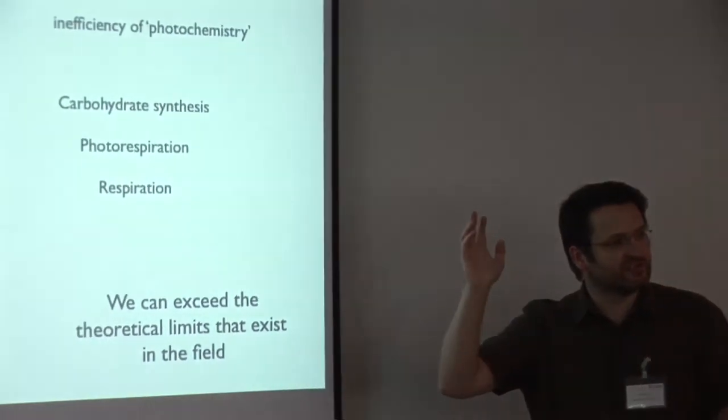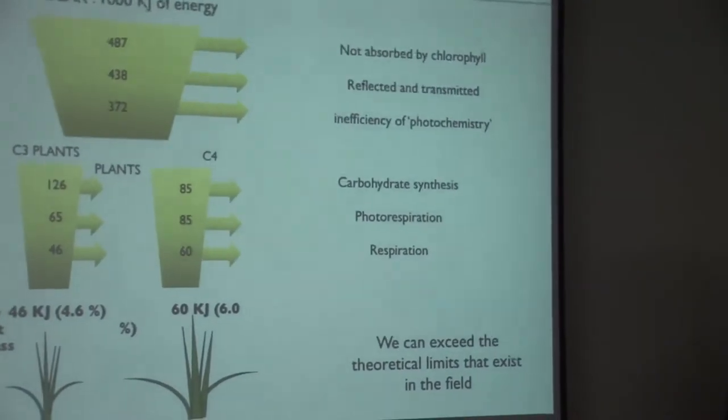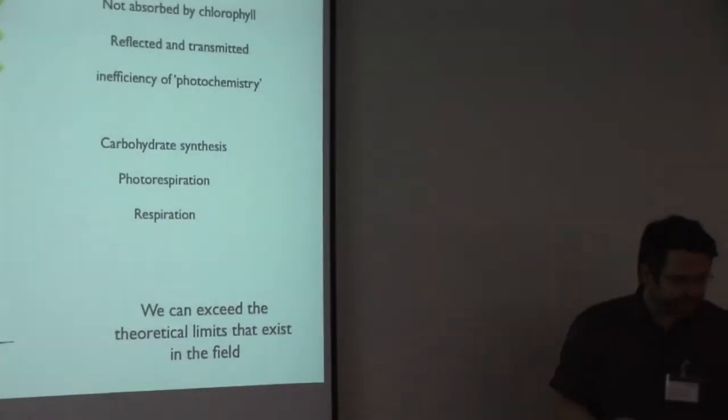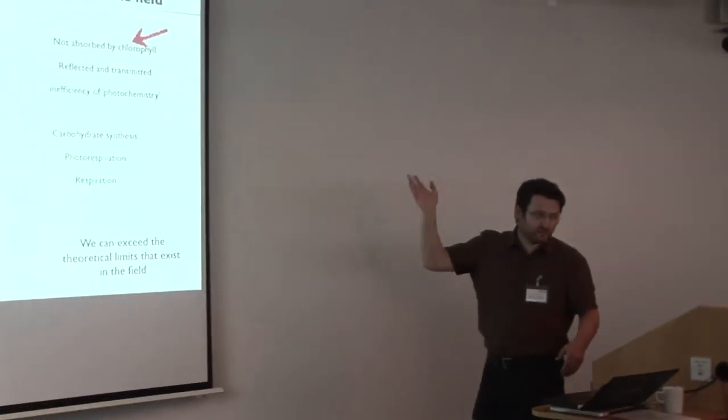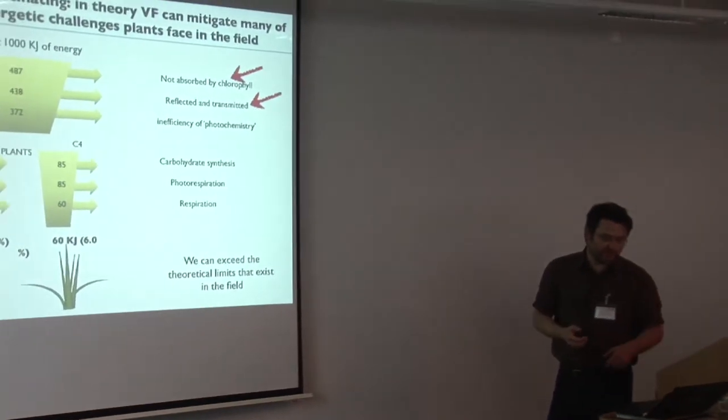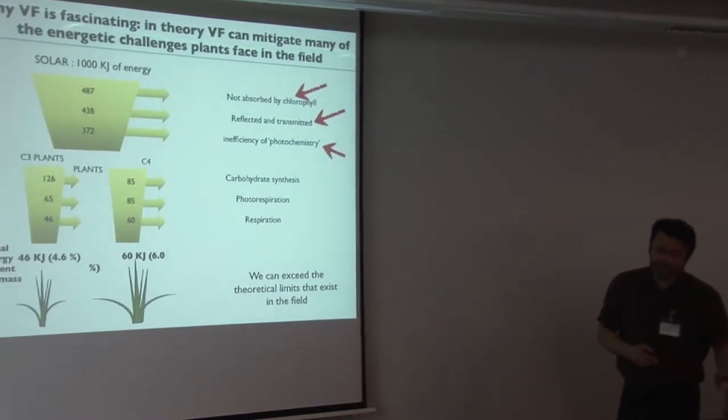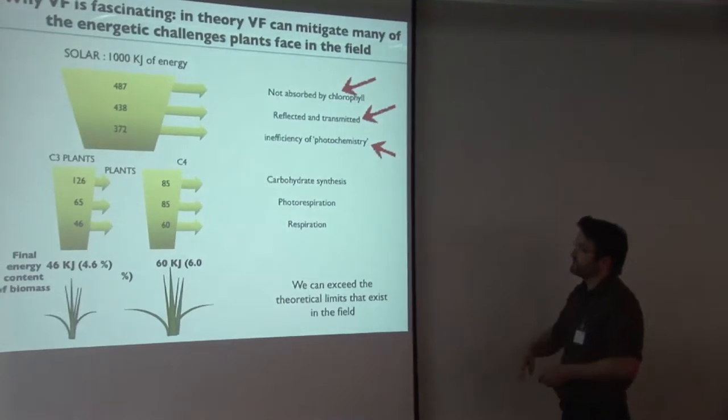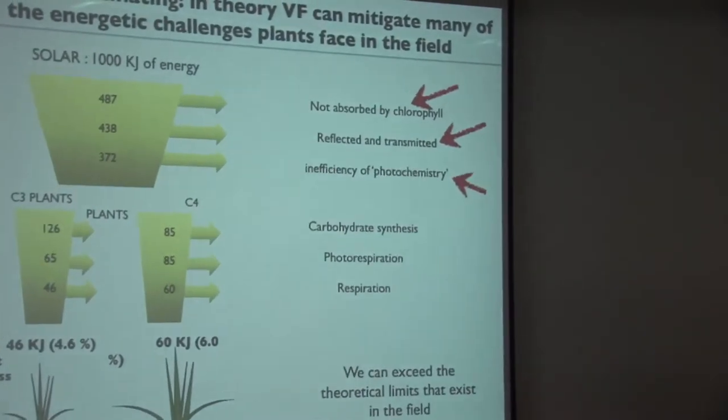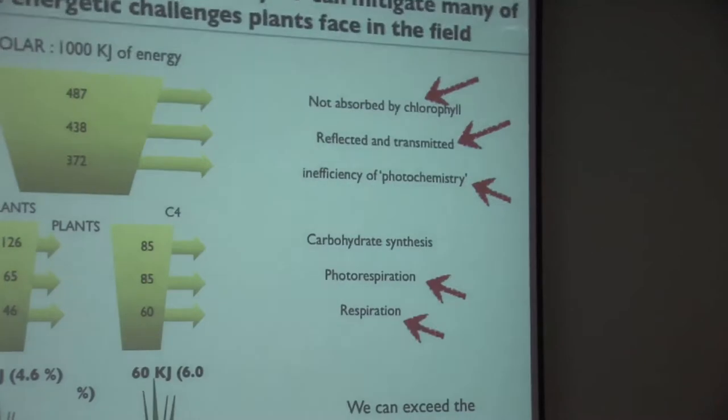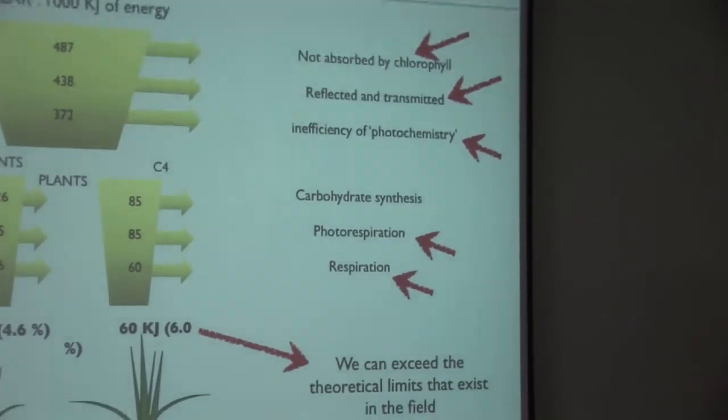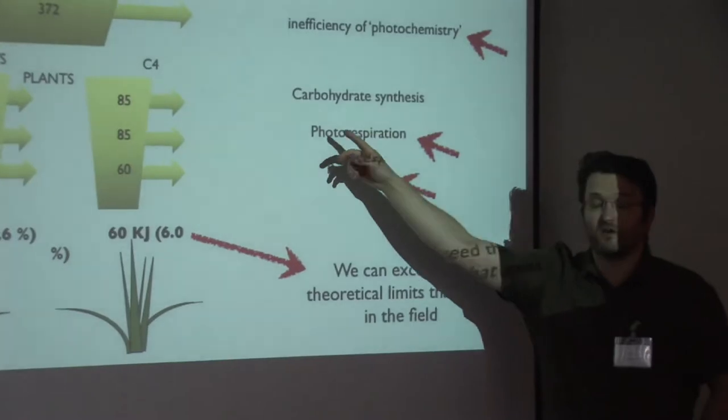But the reason why I find growing plants in controlled conditions fascinating is that in fact we can lose these energetic challenges. We can help the plant overcome these inherent energetic challenges. So if we're using artificial light, we can just use light where we know it's going to be absorbed by chlorophyll. We can control, to an extent, the amount reflected and transmitted. We can control the inefficiency of photochemistry depending on the blue-red ratio that we're using.